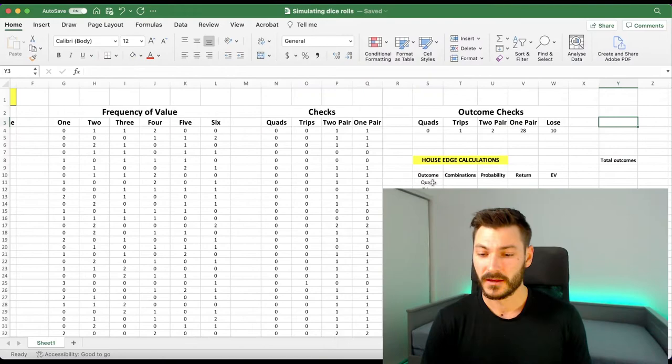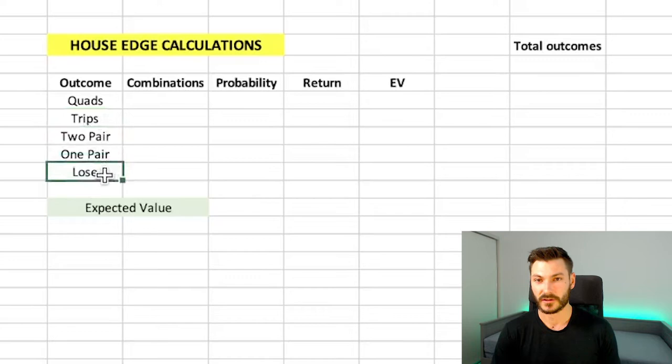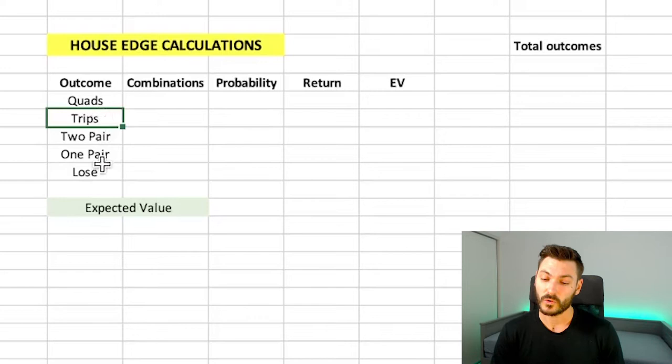So my outcomes that are possible are quads, trips, two pair, one pair and lose. You can decide if you're making a similar game, you can decide whatever outcomes you want for your game, whether it's only quads, trips or lose, you could have straights like two, three, four, five on your die. It's up to you. For me, I'm just going to do one pair, two pair, trips and quads or the player loses. So let's get into it.